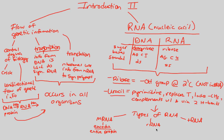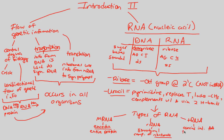rRNA, otherwise known as ribosomal RNA, is a structural component of ribosomes — basically the bricks and mortar of ribosome structure, that's why it's called ribosomal RNA. And tRNA — transfer RNA — is the RNA that carries individual amino acids to the ribosome during translation (TSN). So tRNA carries individual amino acids to the ribosome during the translation process.